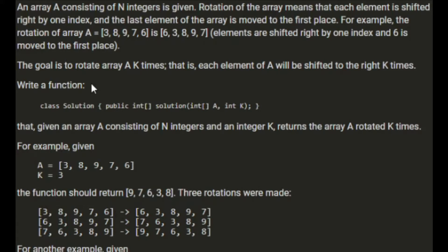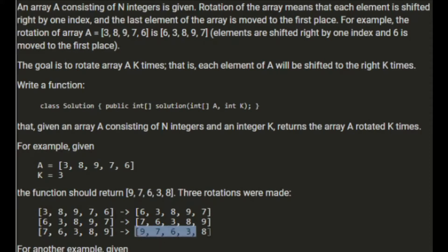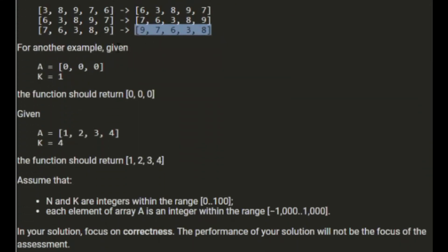The goal is to rotate the array k times, so each element is shifted right k times. The function returns an int array - a shifted array - taking the input array and the number of rotations. So given [3, 8, 9, 7, 6] rotated 3 times, I'd expect [9, 7, 6, 3, 8].